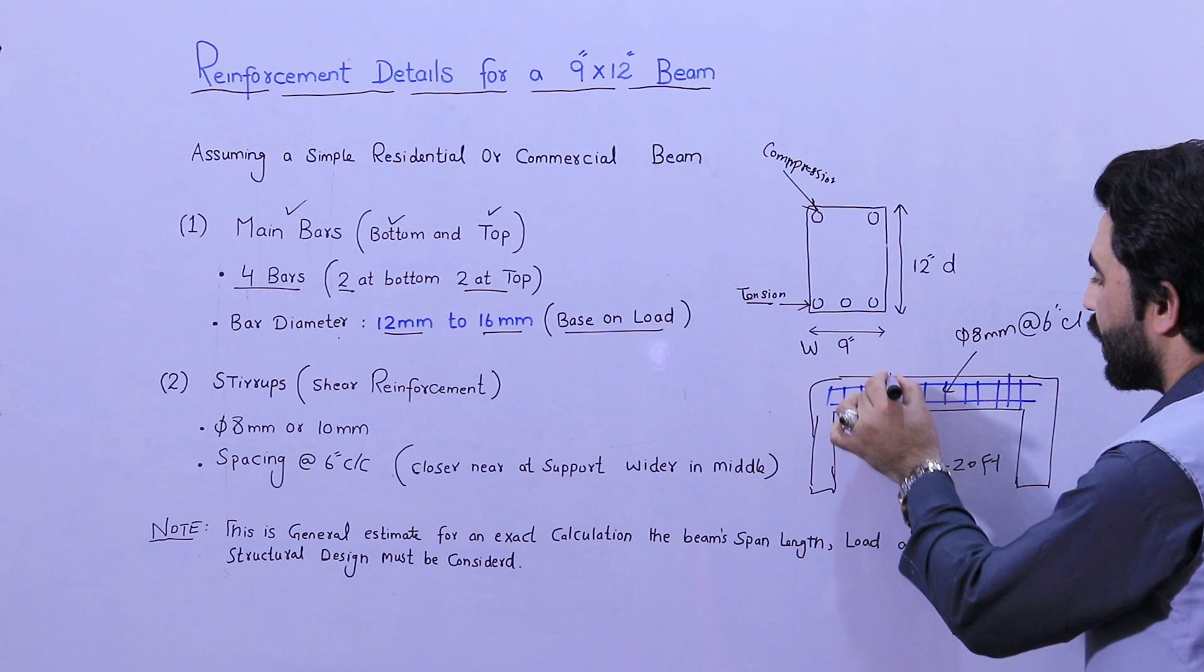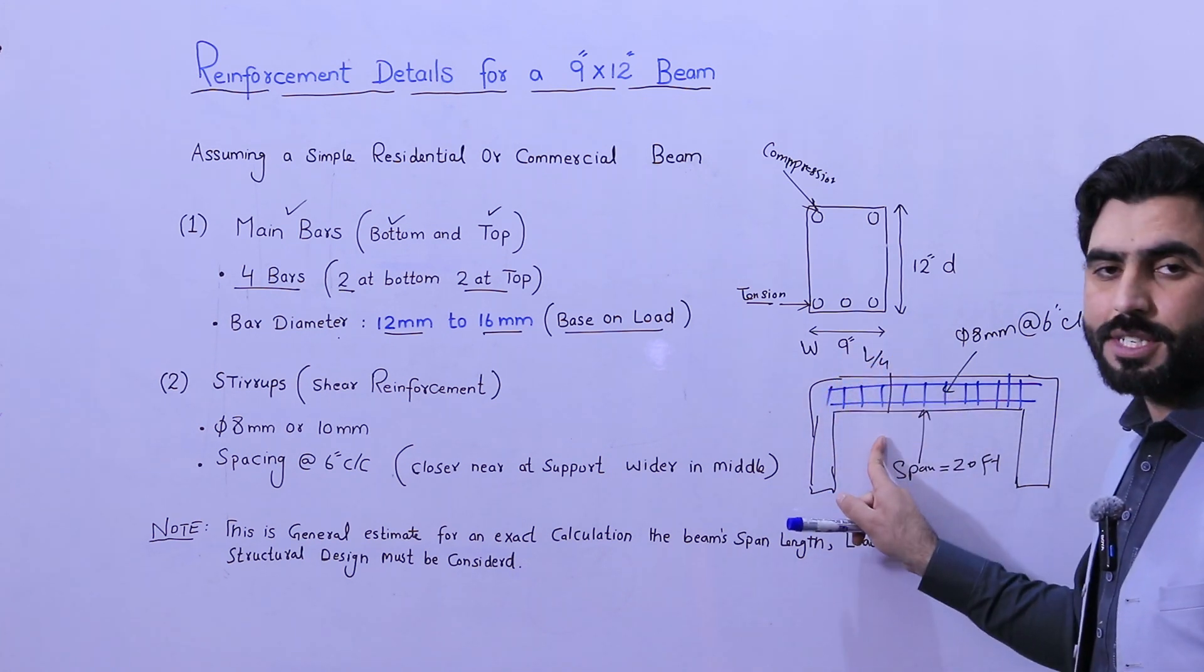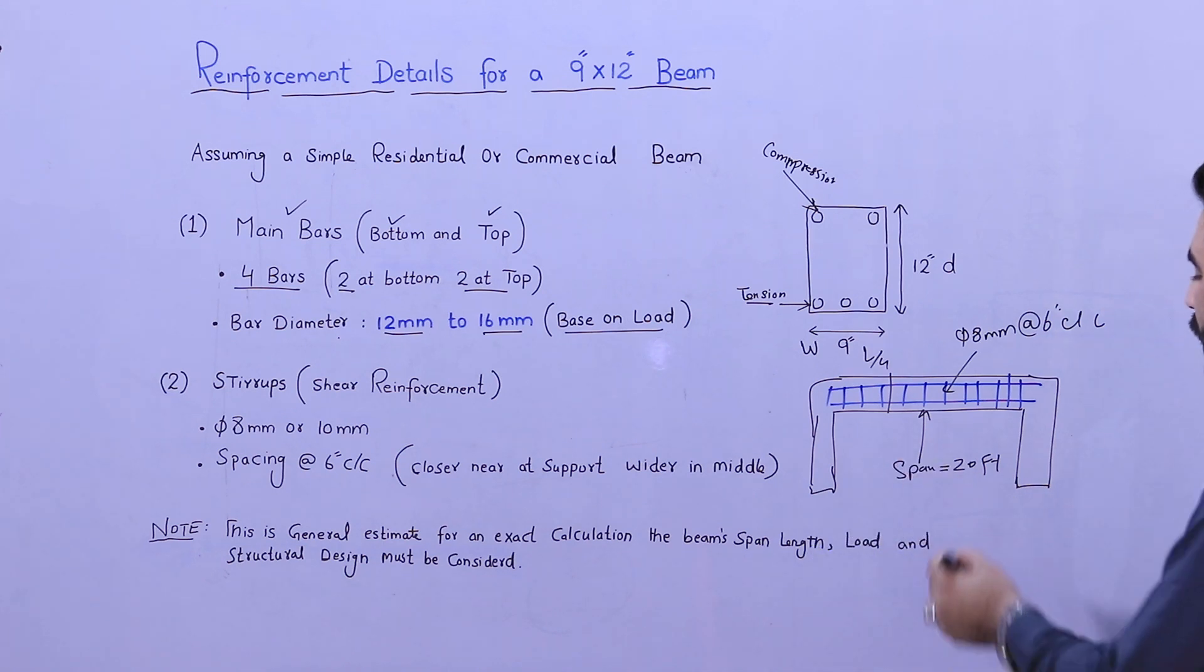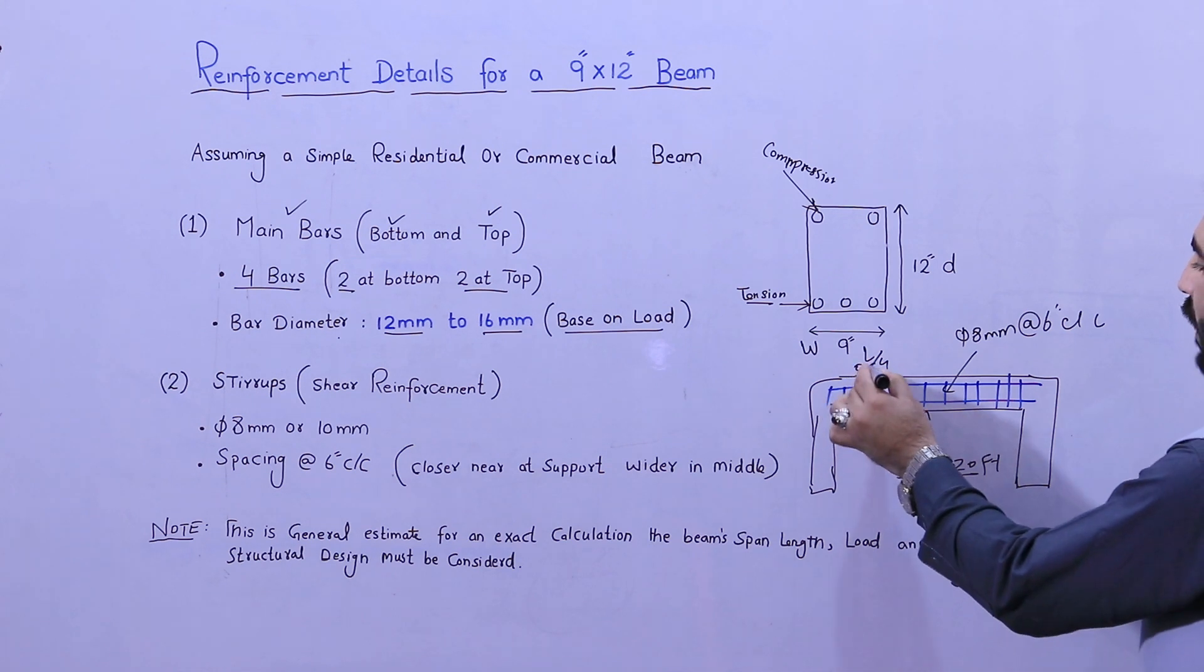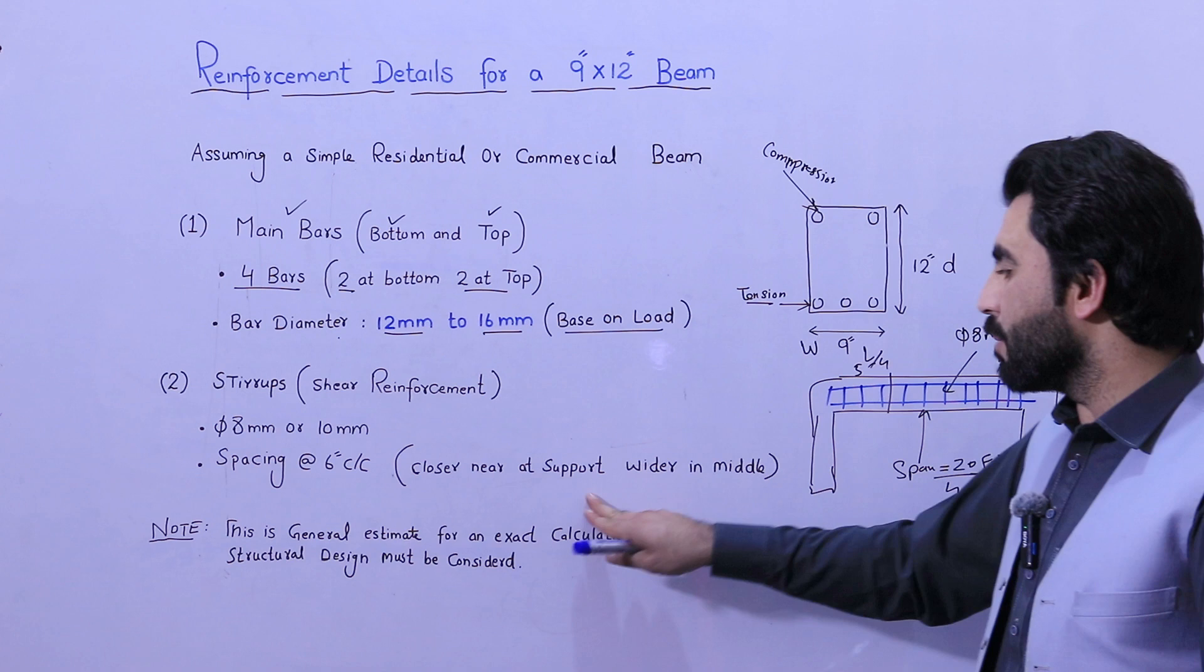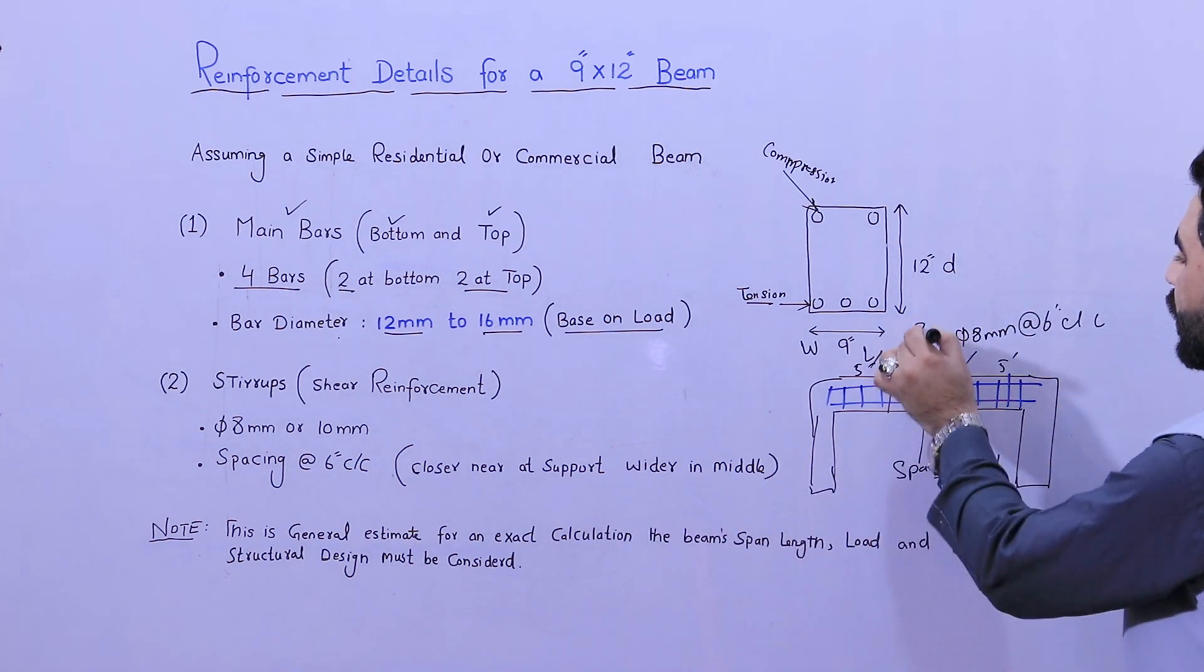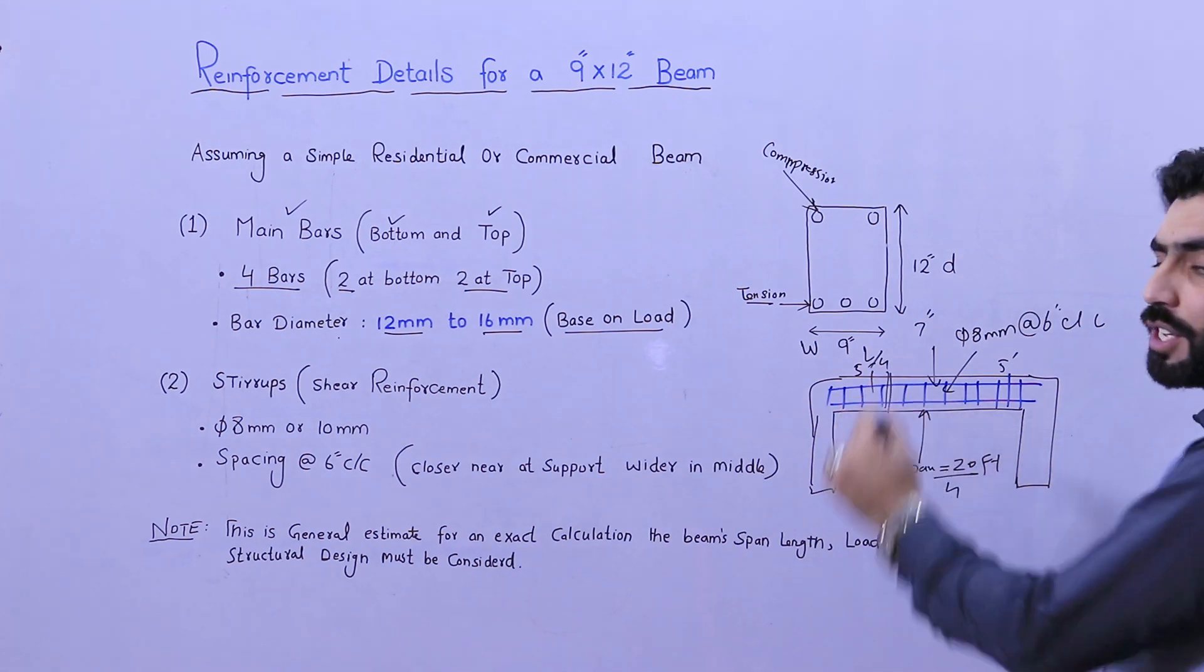Closer near edge support at the distance of L by four, because we have more shear stresses near edge support. L by four means length or span between two columns divided by four, so you will get the value of five feet. To the distance of five feet, closer near edge support. Wider at middle - you can increase up to seven inches. Near edge support you can keep from five to six inches.